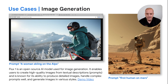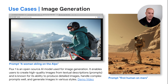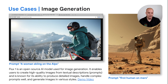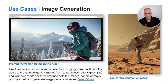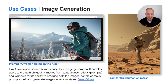The next use case is image generation. This is Flux One, an open source AI model used for image generation. It enables users to create high quality images from textual descriptions. The first prompt on the left asked to provide a woman skiing in the Alps, and it produced a very graphic, vibrant colored image. The one on the right was a prompt saying the first human on Mars — you can see an astronaut investigating terrain with a spacecraft in the background.